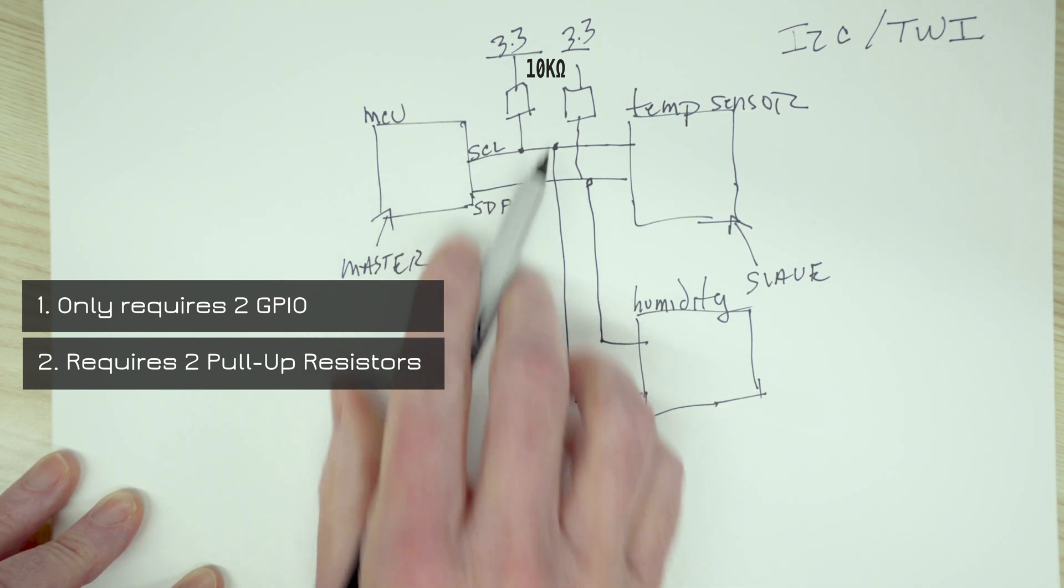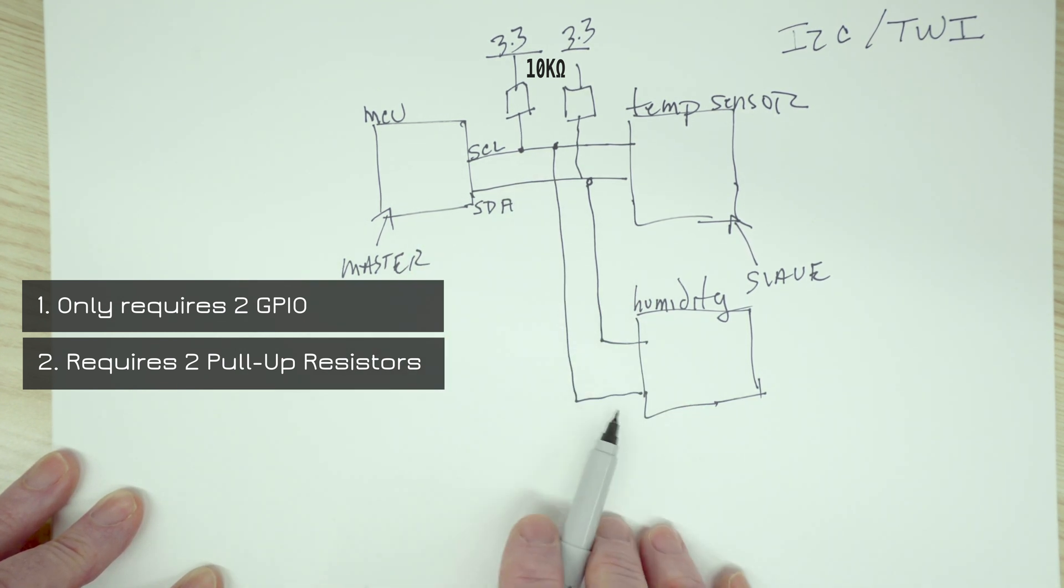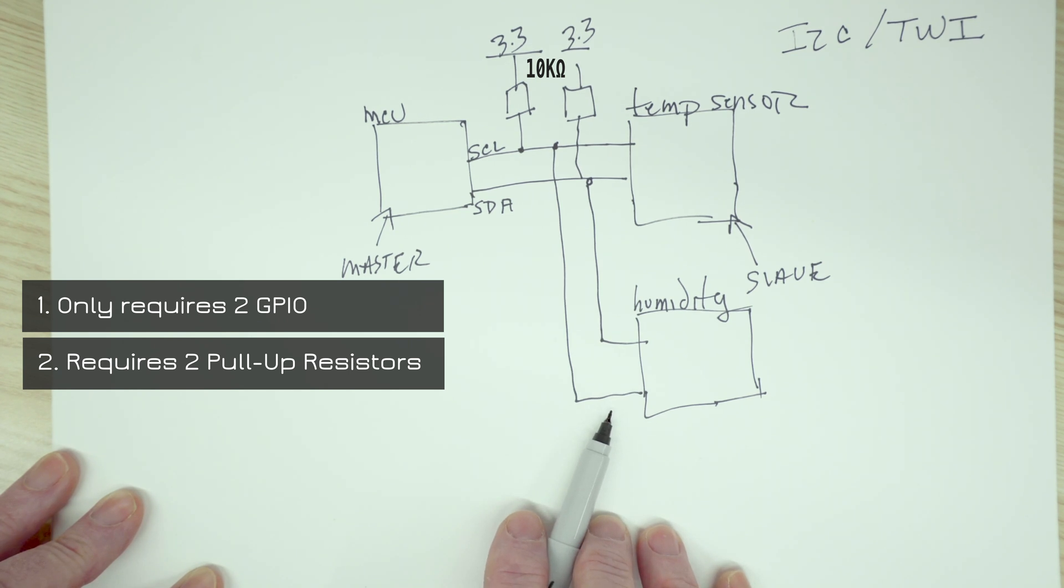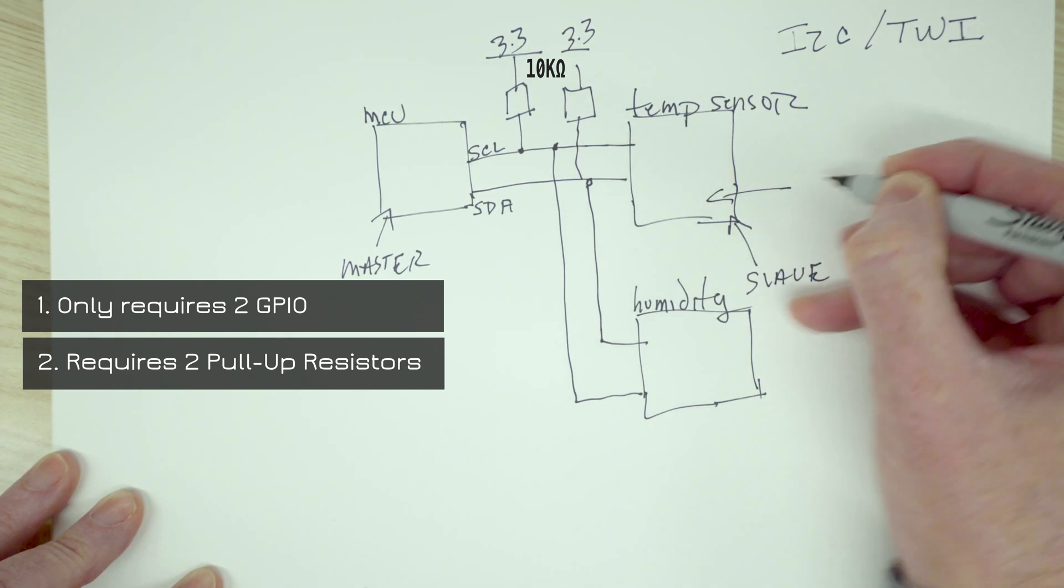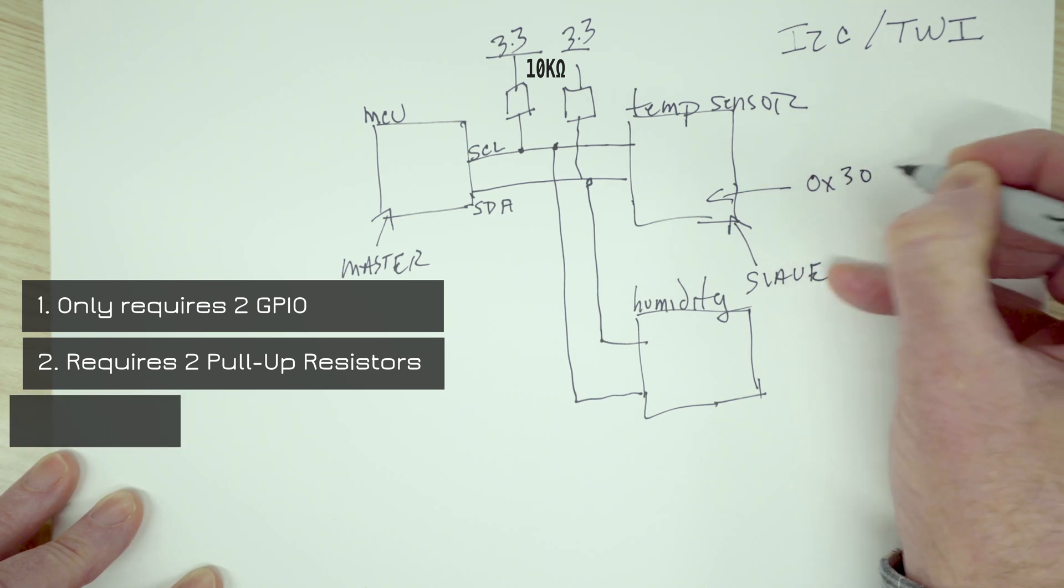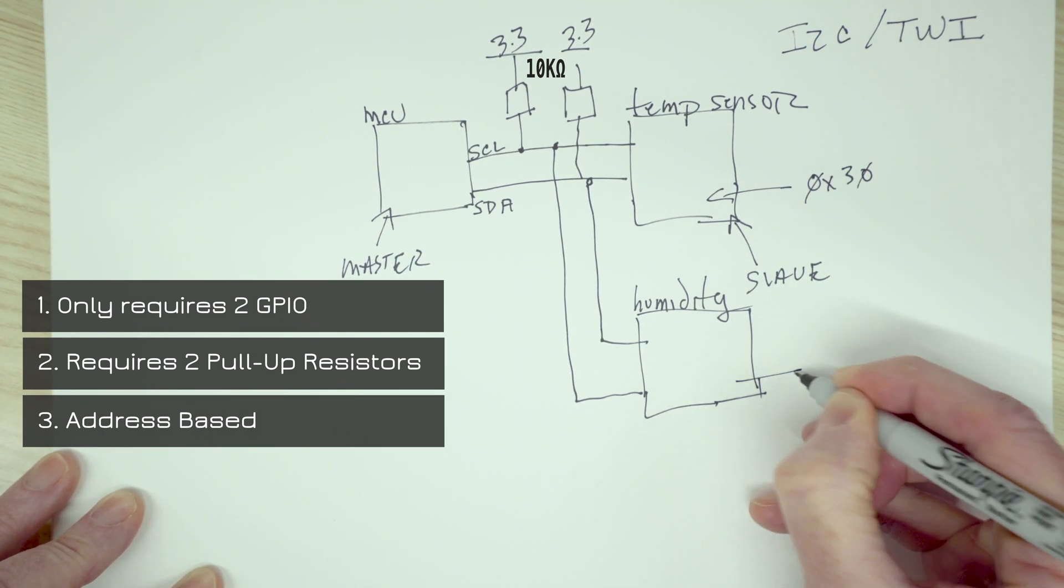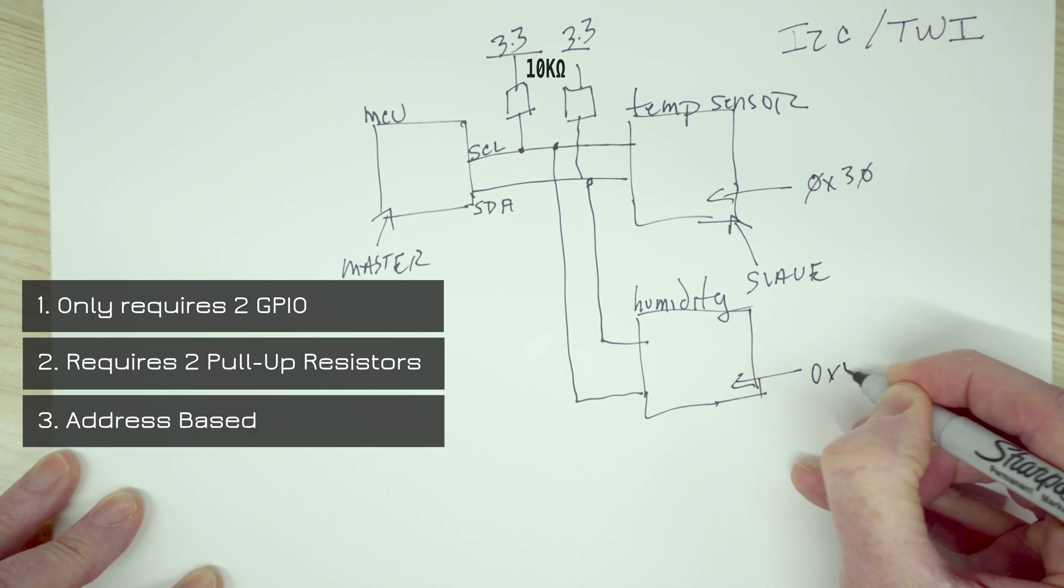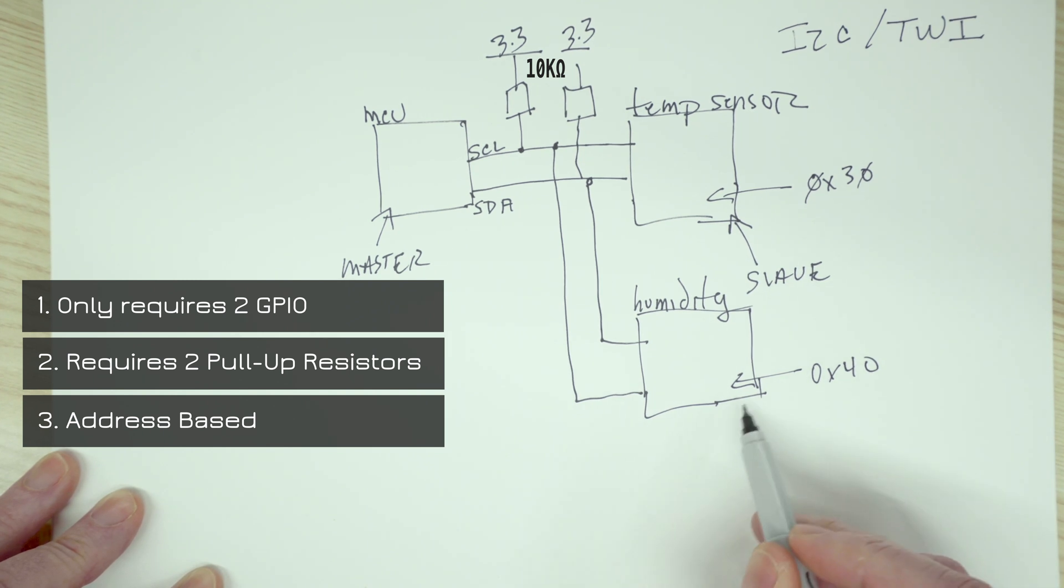And you might ask, well, how is that possible? Because we're basically connected on the same bus, and the way we do that is through an address. So, for example, the temperature sensor could be at 30 hex address and the humidity at 40 hex address.